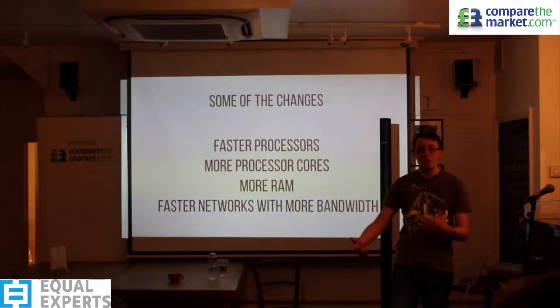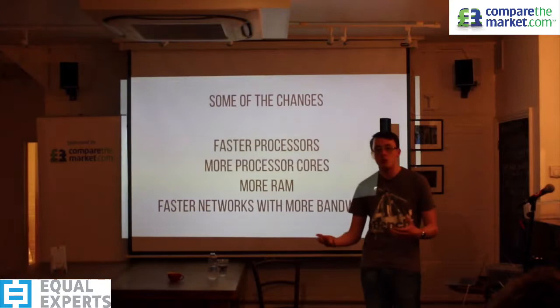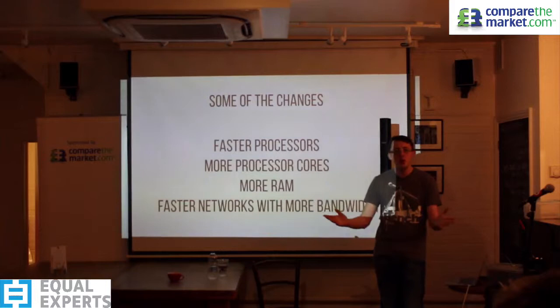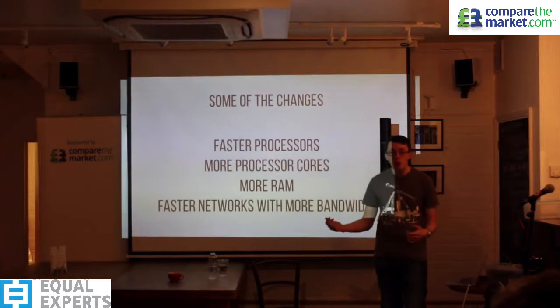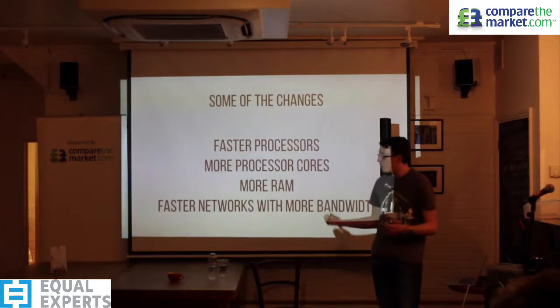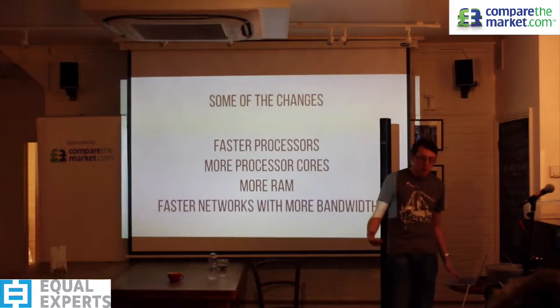We've seen massive changes: processors have gone from 20 MHz to 3 GHz — orders of magnitude difference in a short period. We've gone from single-core to four, eight, sixteen, thirty-two, even sixty-four cores in a single processor. AWS recently announced machines with two terabytes of RAM per instance. We've also got faster networks with more bandwidth connecting computers together.